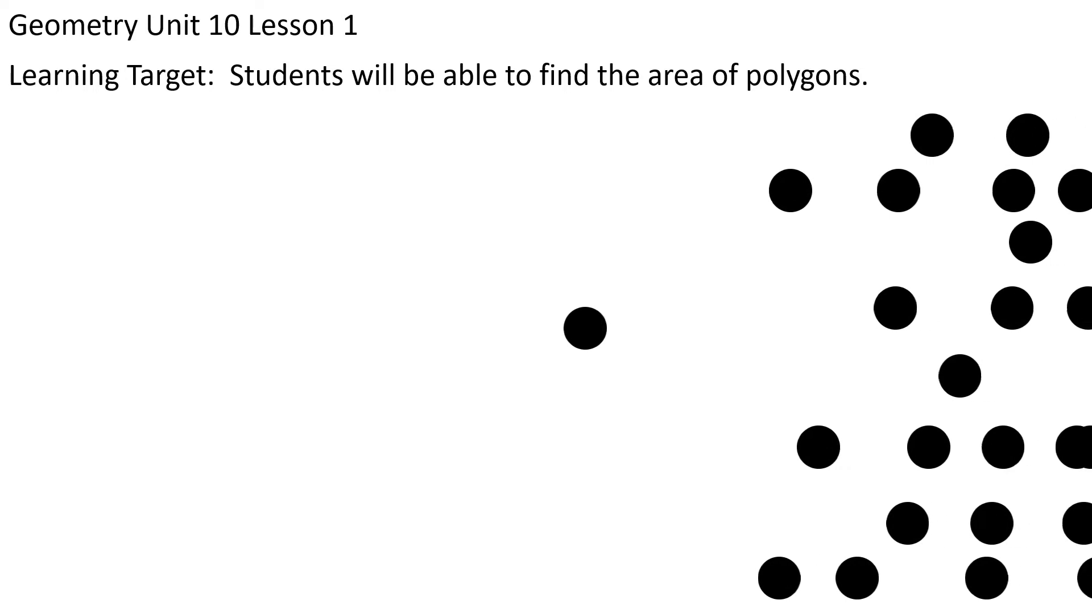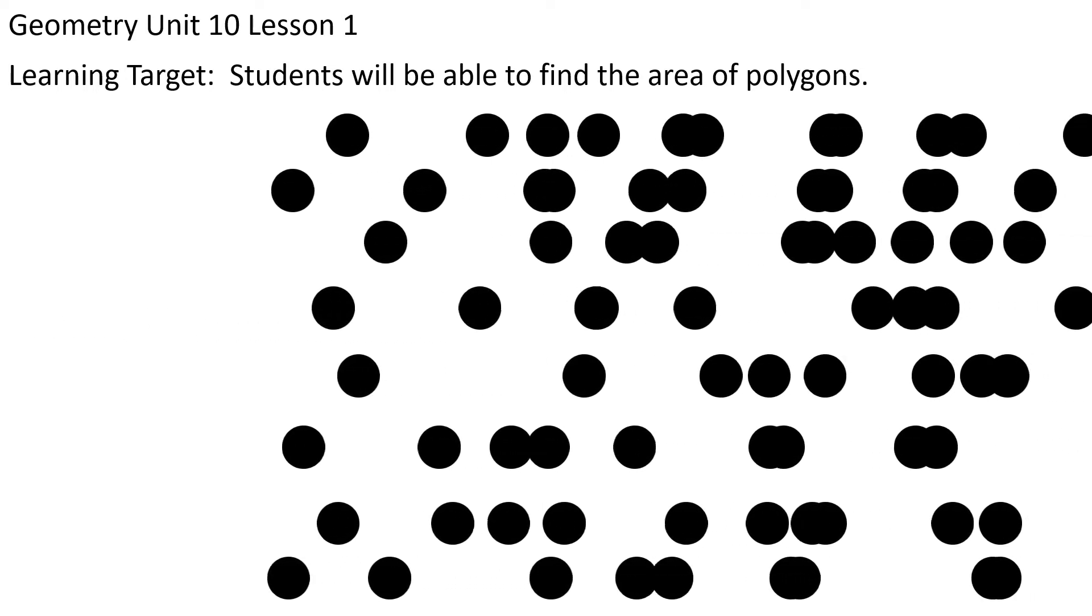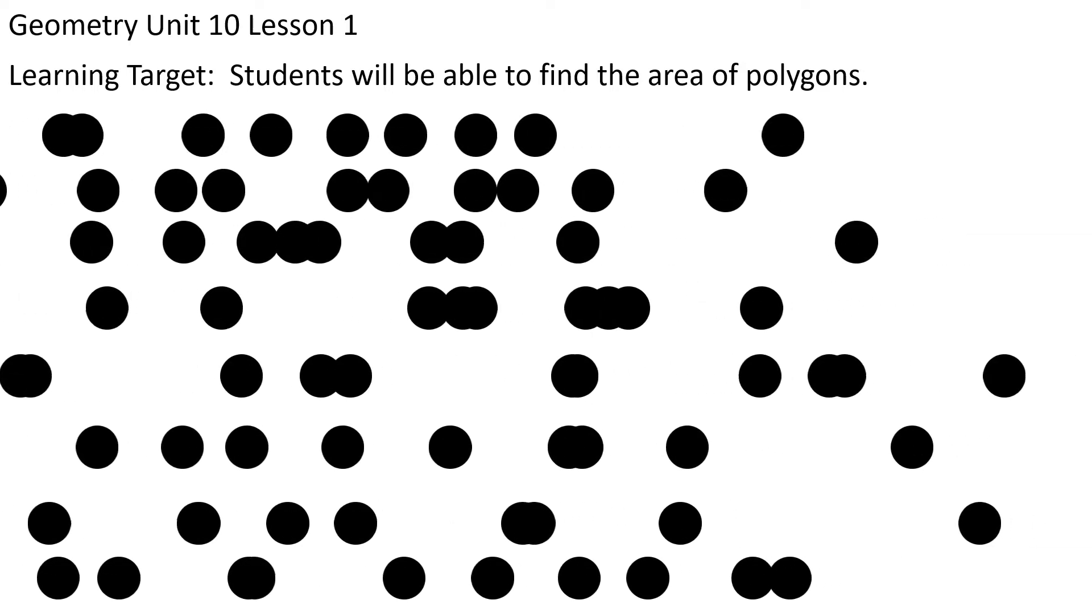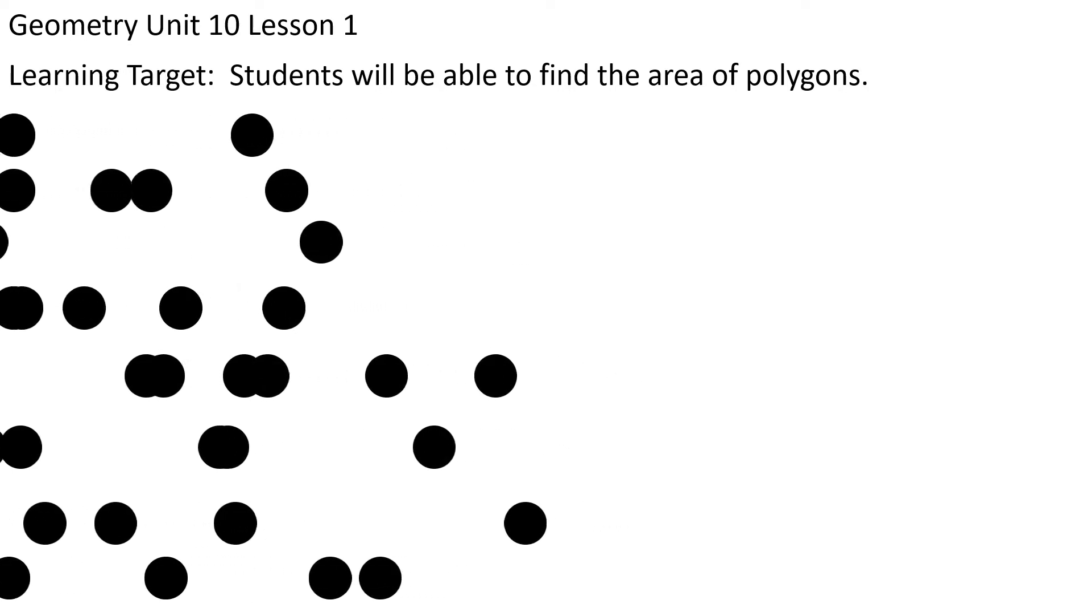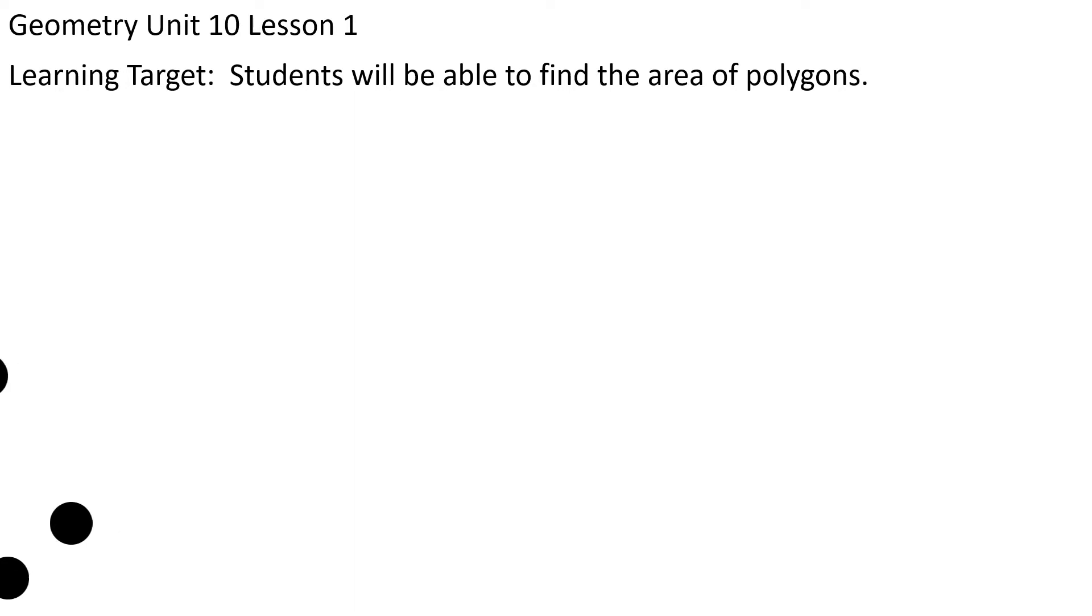And why do we have a parade of dots? I don't know, this is really unusual, but here comes a parade of dots. Let's see why they just keep coming. What is with all these dots? Come on dots, go away. Those dots are not polygons, right? Circles do not count as polygons. Get those things out of here. Oh, they've organized themselves into dot paper. That's what those dots are all about.